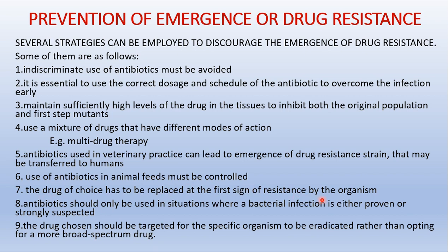The drug of choice must be replaced at the first sign of resistance by the organism. Antibiotics should only be used in situations where a bacterial infection is either proven or strongly suspected. The drug chosen should be targeted for the specific organism to be eradicated, rather than opting for a broad-spectrum drug. Following all these preventive measures can prevent or discourage the emergence of drug resistance in microorganisms.